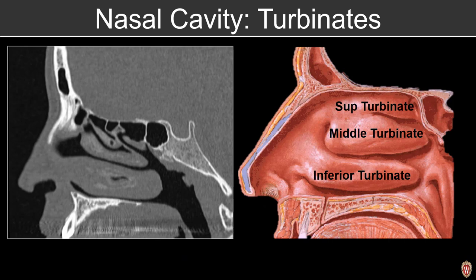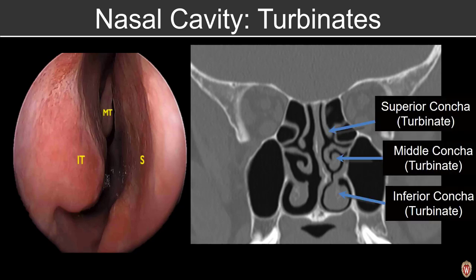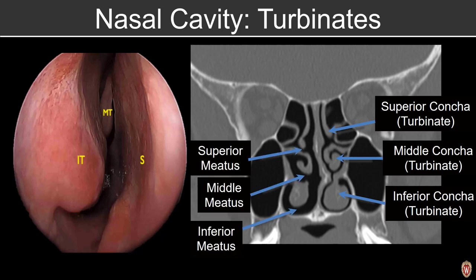On either side of the nasal septum, we see three paired turbinates, which help filter the air we breathe. On our coronal view, we can see these three paired turbinates — the superior, middle, and inferior turbinate. Subjacent to the turbinates are the air spaces referred to as the superior, middle, and inferior meatus, which drain various structures within the sinonasal cavity.